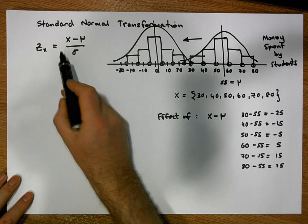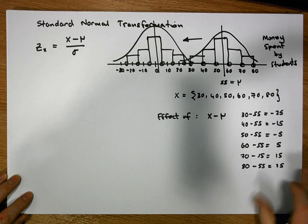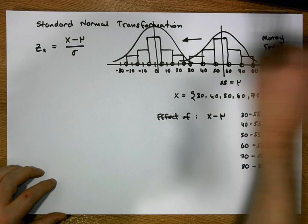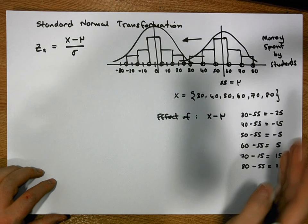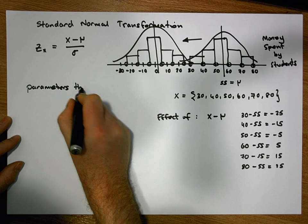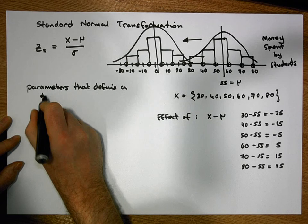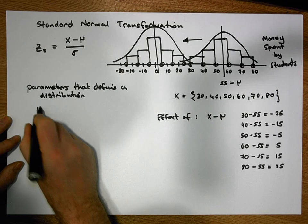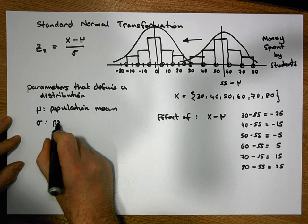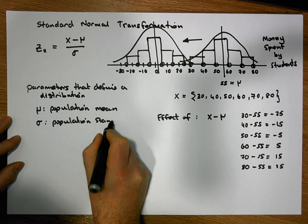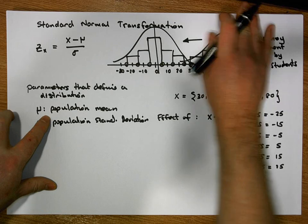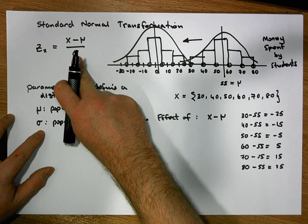So that's the effect of x minus the population mean. But every distribution has two parameters that define it: μ, the population mean, and σ, the population standard deviation. We know the effect of subtracting the mean — it shifts the curve over zero. So what is the effect of dividing by the standard deviation?